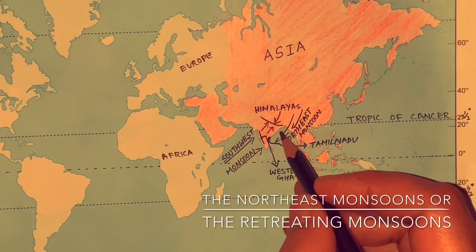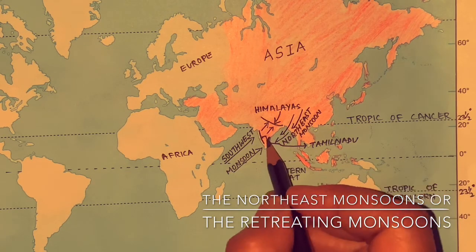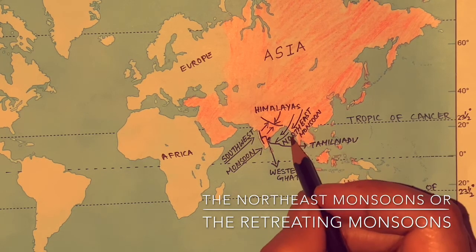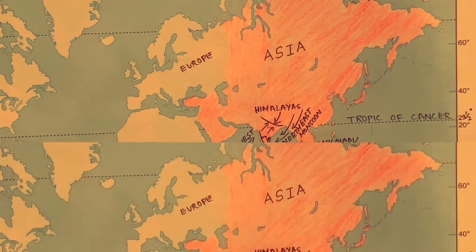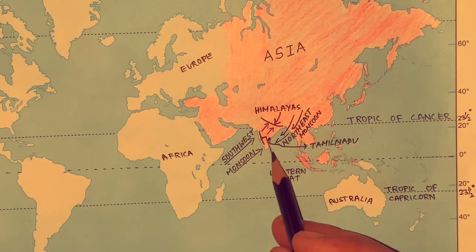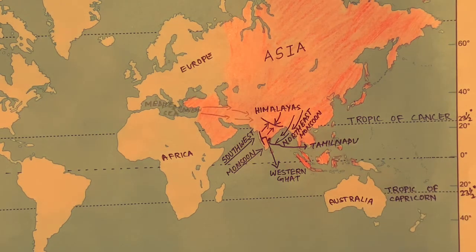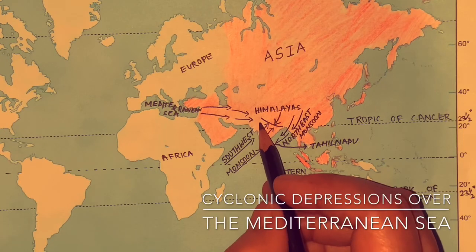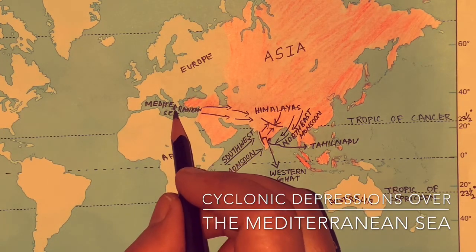Cold, dry land winds blow out from here towards the surrounding seas. As they cross the seas, they gather moisture and bring rain to coastal regions such as coastal Tamil Nadu that lie in their path. These winds are known as the northeast monsoons or the retreating monsoons. Indonesia, Malaysia, Philippines, Sri Lanka, and Japan also receive rain during this season. Punjab plains receive winter rain from cyclonic depressions that originate over the Mediterranean Sea.